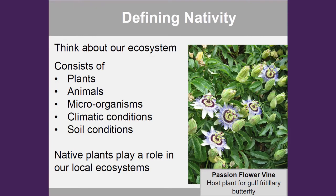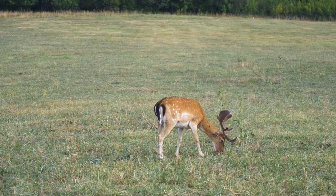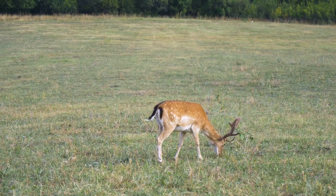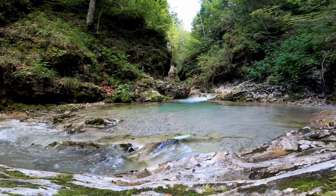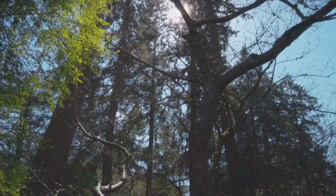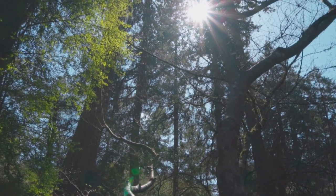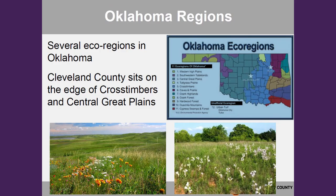When thinking about native plants, we really have to define nativity. Defining nativeness requires us to think about our local ecosystem, which consists of animals, plants, the microorganisms within the soil, the climate conditions, and the soil conditions. Those environments can be very specific. There are a lot of different ecoregions within Oklahoma. Cleveland County and Norman actually sit on the cusp of two different ecosystems — the cross timbers and the great central plains — so we have a good mix of different native plants we can use depending on the climate conditions of your landscape.